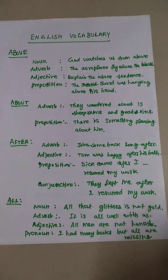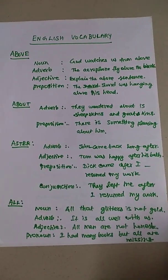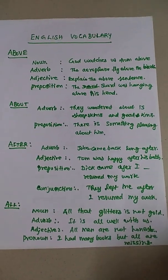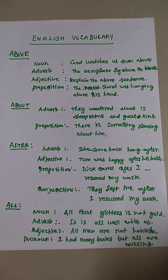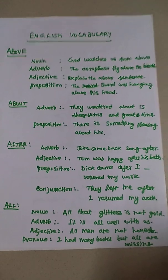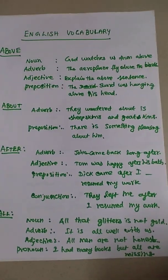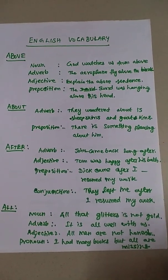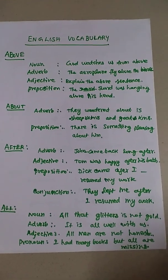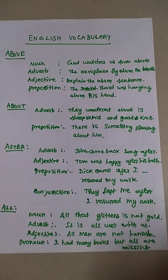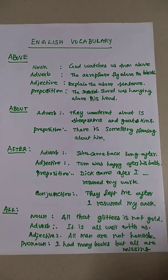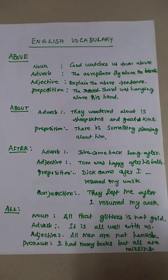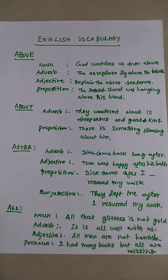All is used as noun, adverb, adjective, and pronoun. Noun: 'All that glitters is not gold.' Adverb: 'It is all well with us.' Adjective: 'All men are not honest.' Pronoun: 'I had many books, but all are missing.' This is the pronoun usage of 'all.'